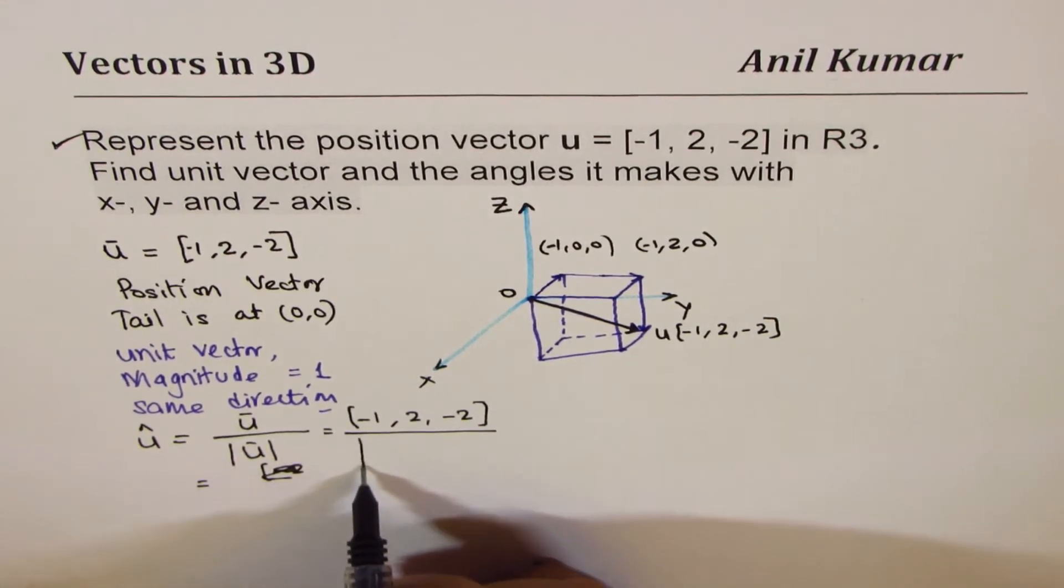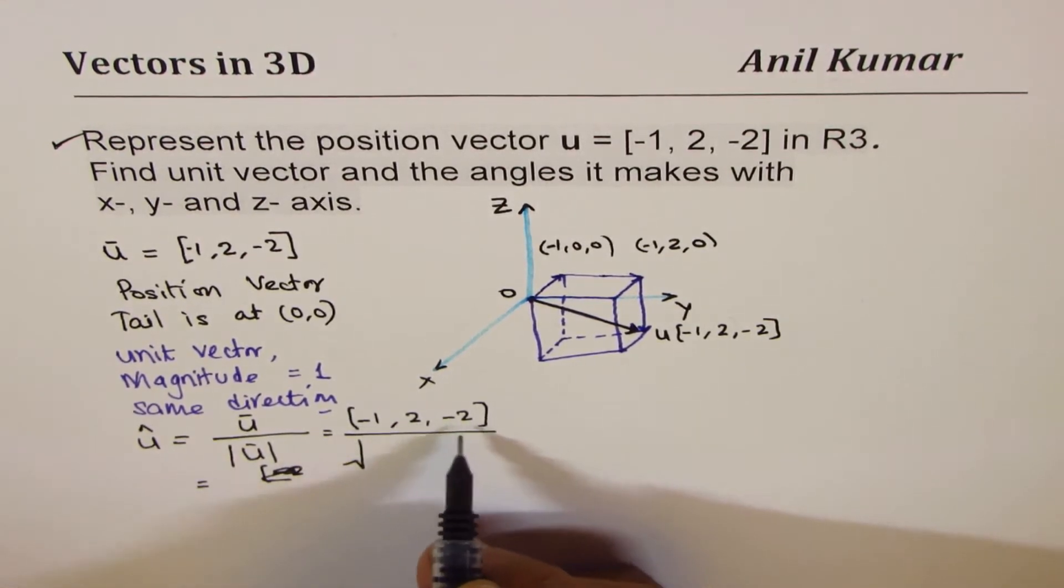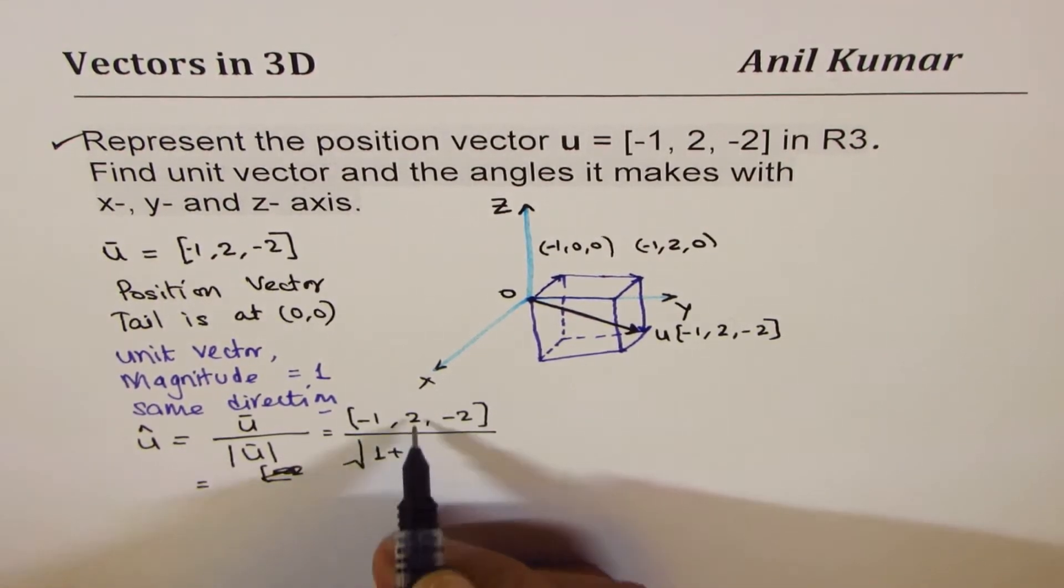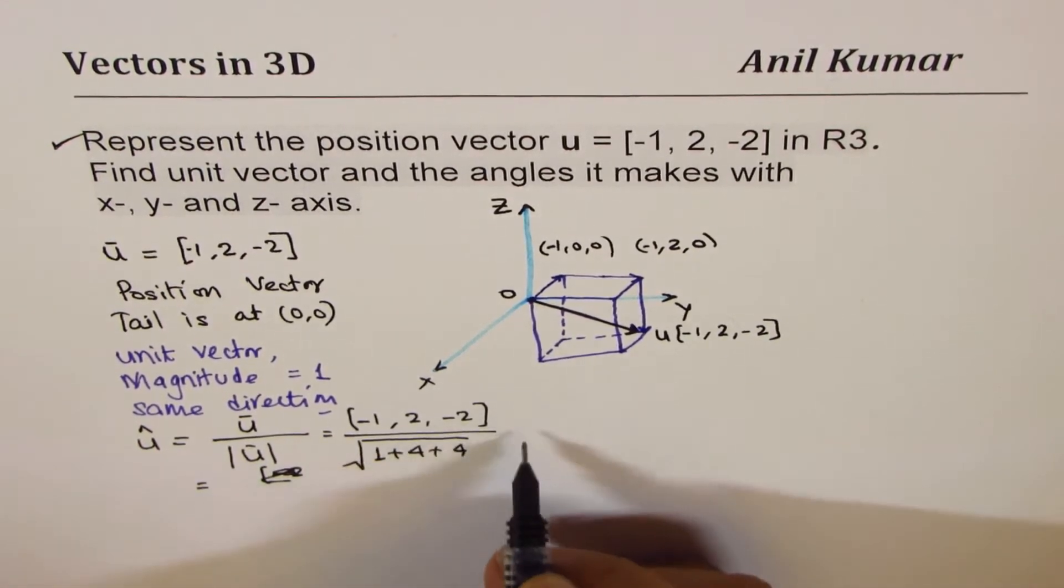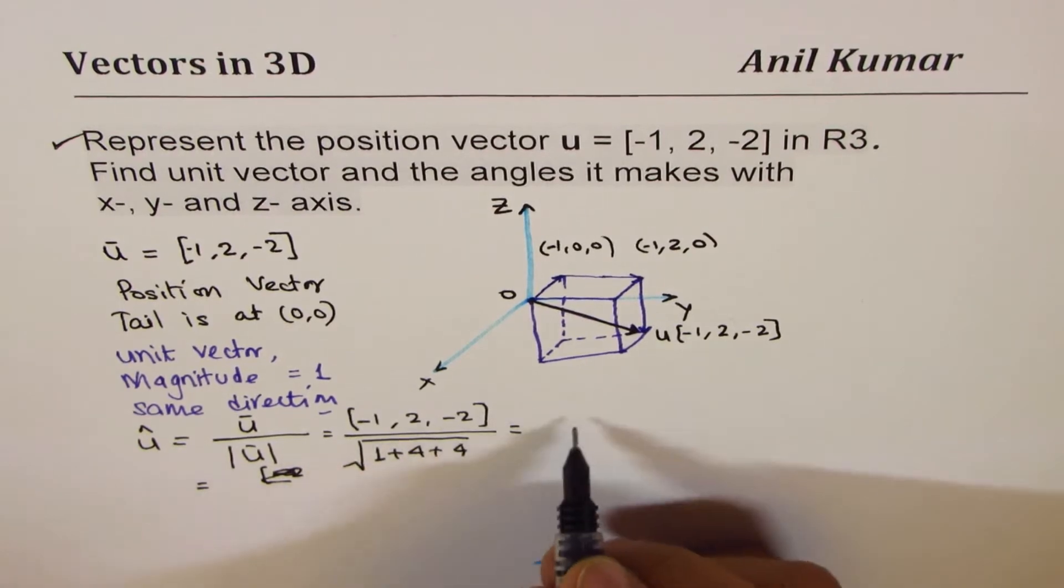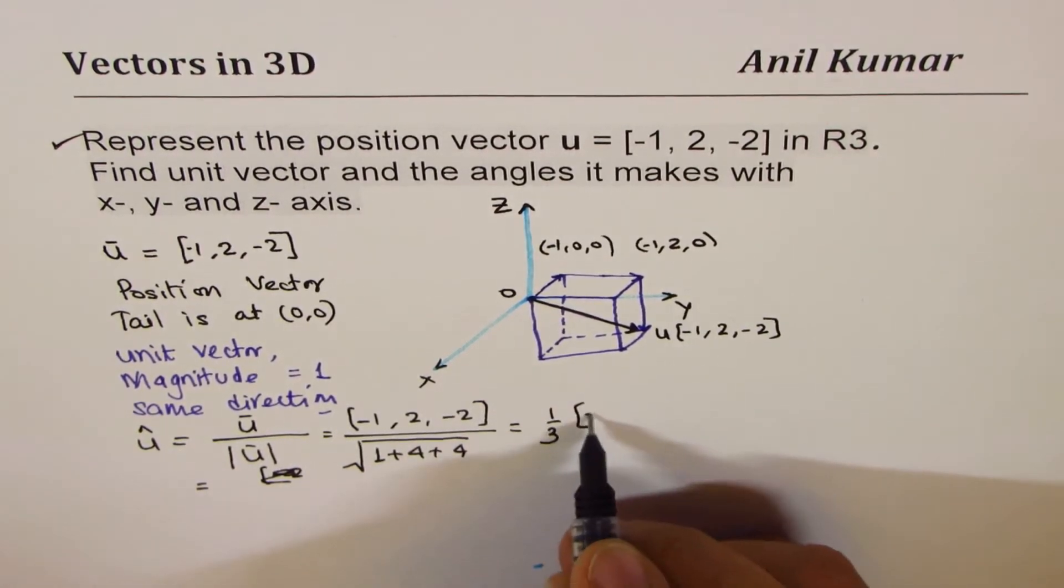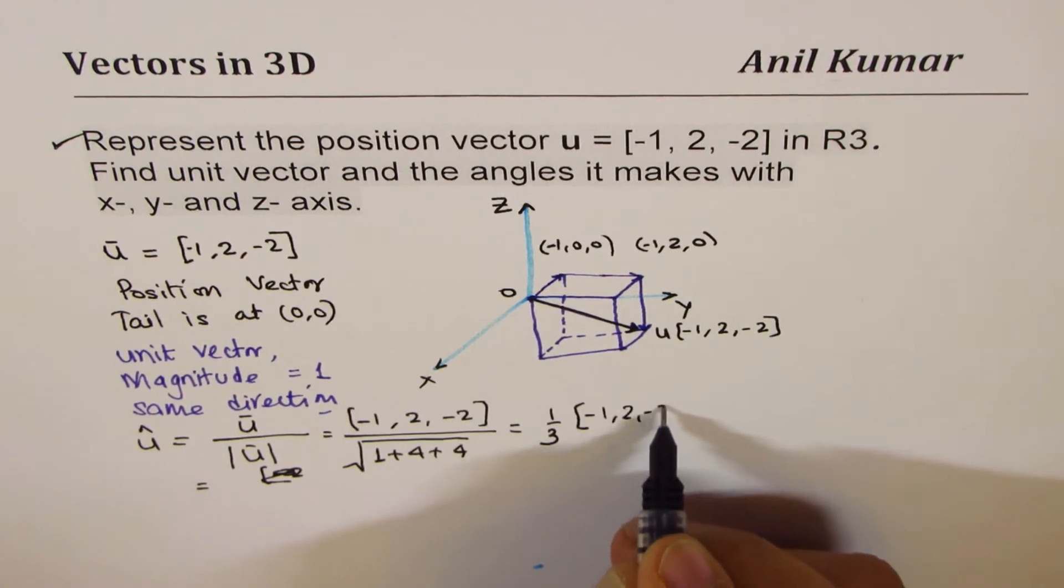And the magnitude is, we'll add squares of each direction numbers. These are called the direction numbers. -1 squared is 1, plus 2 squared is 4, plus 2 squared is 4, square root. And that gives you square root of 9, or you can say 1 over 3, of (-1, 2, -2).